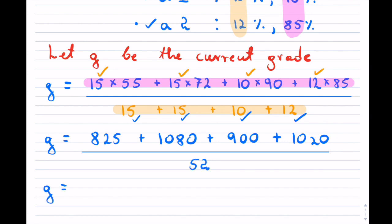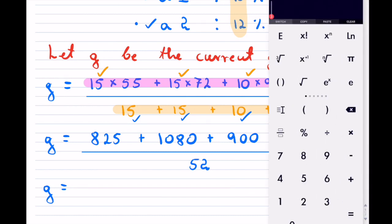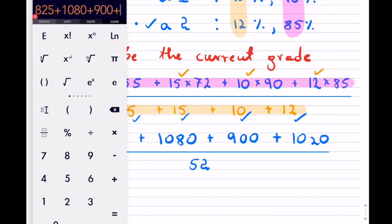And our grade equals. So let's add up everything we have there. We have 825, plus 1080, plus 900, plus 1020. Okay, so that is our total. So 3825, that is on top,